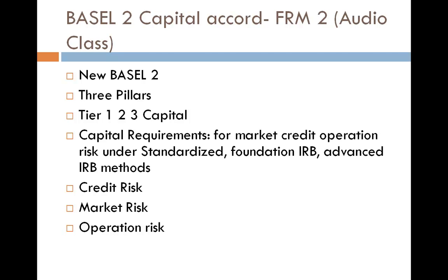Under Basel 1, a financial institution's risk categorization depended on whether it was in an OECD member country or not. Non-members had to hold more capital against credit-risky positions than members, creating an unfair advantage for OECD banks. Moving to Basel 2 under the standardized approach, the amount of capital a bank must hold is specific to the risk of its credit-risky assets, the type of instruments the claim is written on, and in the case of claims on banks, the maturity of those assets. These new guidelines are a refinement relative to the original Basel regulation.